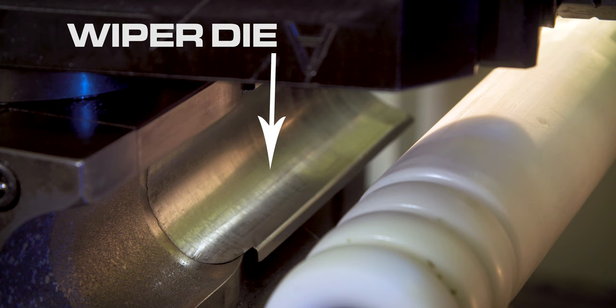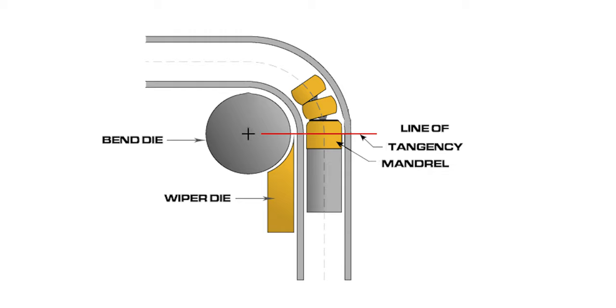Another super important bit is the wiper die. It's positioned on the inside just before the line of tangency and against the bend die to fill in this space and prevent wrinkling.